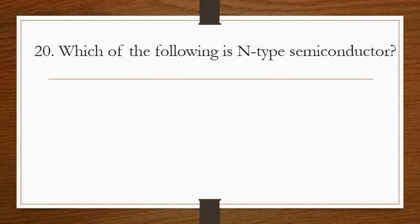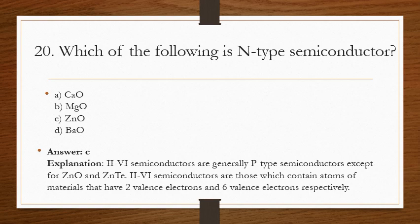Question 20: which of the following is an N-type semiconductor? The answer is C. Two-six semiconductors are generally P-type semiconductors, except for ZnO and ZnS. Two-six semiconductors are those which contain atoms with two valence electrons and six valence electrons respectively.